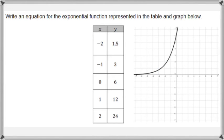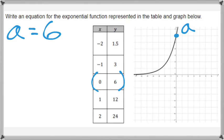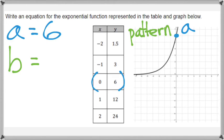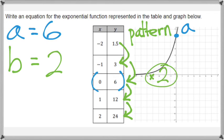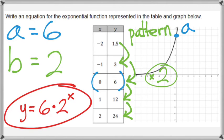We have another table and graph and we're just trying to write the exponential function. We start by finding our initial value, a. We notice that x is equal to 0 and y is equal to 6 at that location, and we can see it at the top of the graph as the y-intercept, so a equals 6. For the common ratio b, the pattern goes 1.5 to 3, 3 to 6, 6 to 12 — we are doubling, multiplying by 2. So b equals 2, and our final answer is y equals 6 times 2 to the power of x.